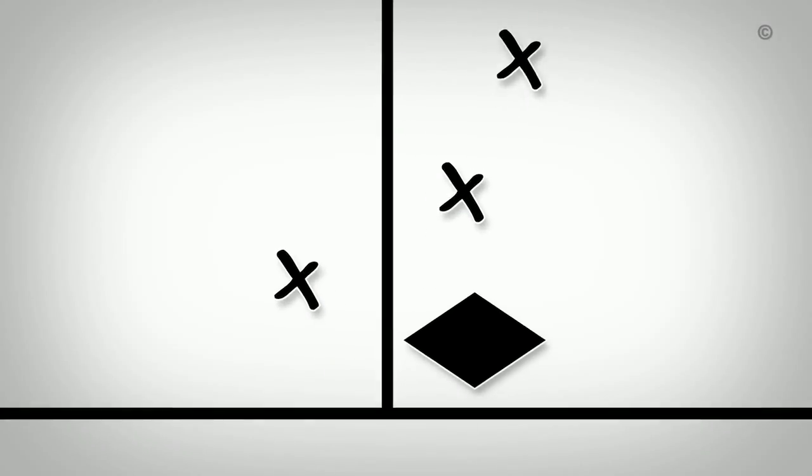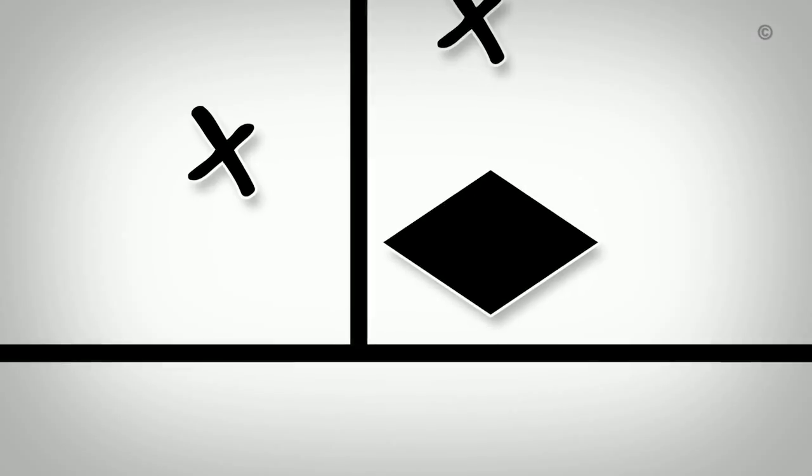We can also determine if our finding is statistically significant by looking to see if any part of the diamond touches the line of no difference. If it doesn't touch, then we know we have a statistically significant finding.